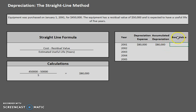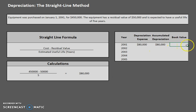Last but not least is book value. I highly recommend that you memorize the formula for book value because it's extremely important, not only for this method and straight line problems, but also for other depreciation methods. Book value is always going to be equal to the cost of the fixed asset — $450,000 — minus the accumulated depreciation. So in our case, $80,000. After year one, our book value is $370,000.